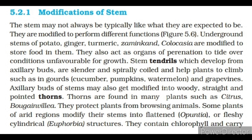Modifications of stem. The stem may not always be typical. They are modified to perform different functions. Underground stems of potato, ginger, turmeric, zaminkand and colocasia are modified to store food in them. They also act as organs of perennation to tide over conditions unfavorable for growth. Stem tendrils, which develop from axillary buds, are slender and spirally coiled and help plants to climb, such as in gourds, cucumber, pumpkins, watermelon and grapevines. Axillary buds of stems may also get modified into woody, straight and pointed thorns, found in many plants such as citrus and bougainvillea.